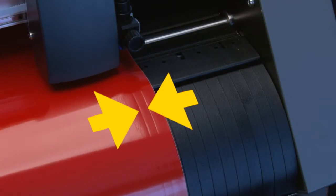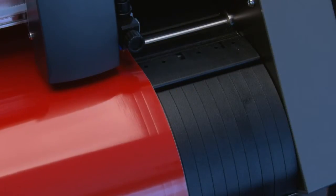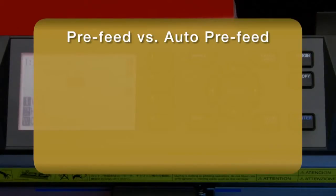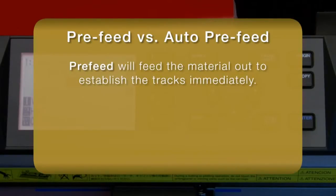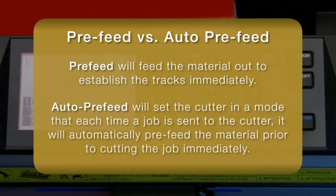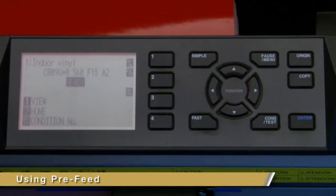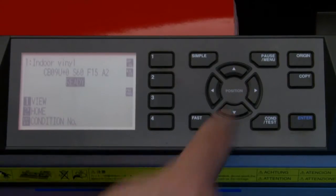Once these tracks are established, the push rollers will accurately follow these tracks during the cutting operation. The difference between these two functions is that pre-feed feeds out the material to establish the tracks immediately, whereas auto pre-feed sets the cutter in a mode that prior to each job being cut will automatically pre-feed the material to a predetermined length.